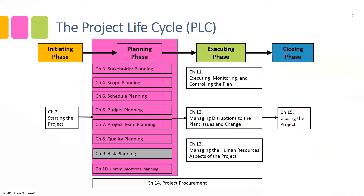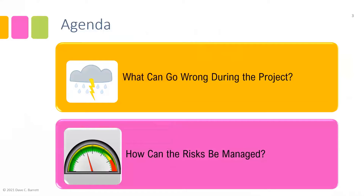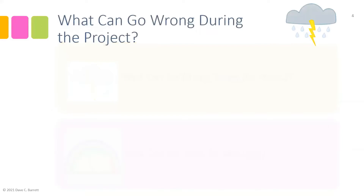This is an important area of planning. It's basically looking at what are the things that could go wrong during a project and what can we do about it. Our agenda addresses exactly that: first, what can go wrong during the project, and second, how can the risks that are identified be effectively managed? Rather than just be a victim of risks, we can attempt to manage those risks and live effectively with them during the project.